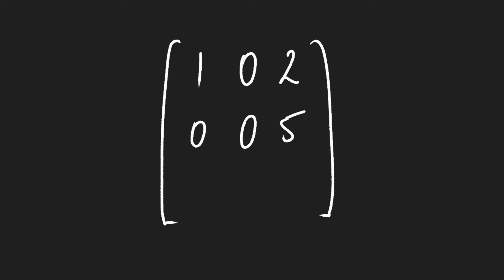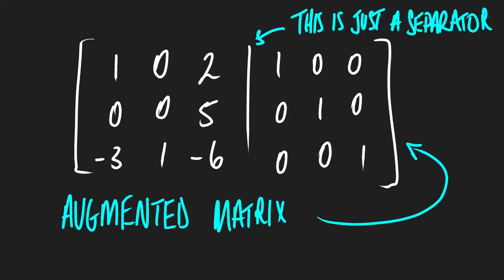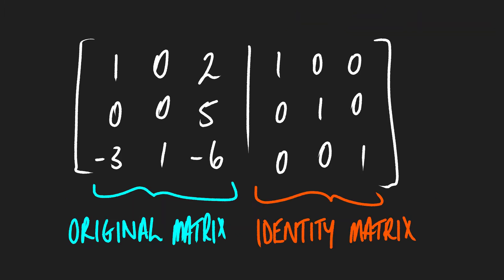Let's go through an example to show what this method is and what the result is. So let's say we have a matrix: 1, 0, 2, 0, 0, 5, minus 3, 1, minus 6, and we want to find its inverse. The Gauss-Jordan method says we need to set up an augmented matrix where we have our original matrix and an identity matrix, creating this augmented matrix.